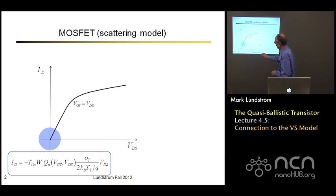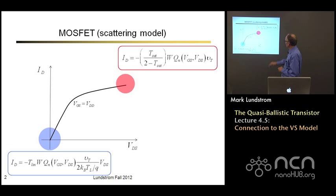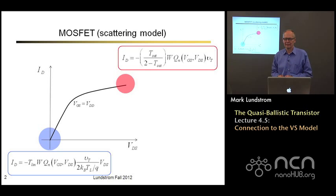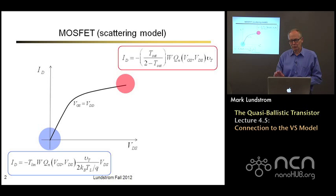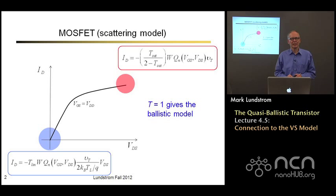Here's our model. Our model relates current to charge and transmission. We have both a linear region expression and a saturated region expression. We can write the charge using careful MOS electrostatics to treat sub-threshold, above threshold, DIBL, and things like that. Or we can do it in a simpler way and just look above threshold and write it as C_inversion times (V_G minus V_T). When the transmission is one, we have our ballistic model. We've been spending this week talking about what happens when transmission is less than one.